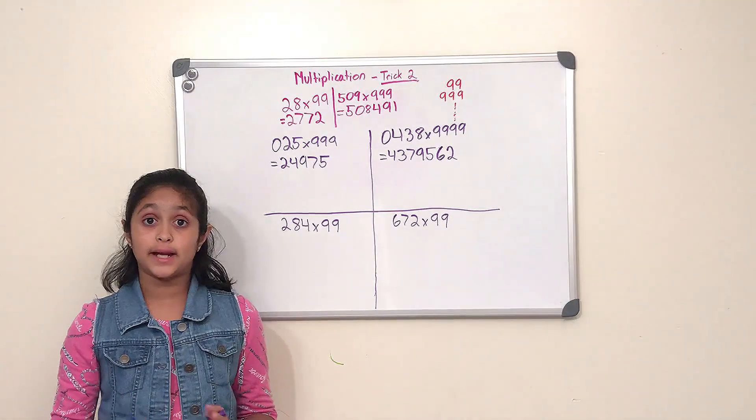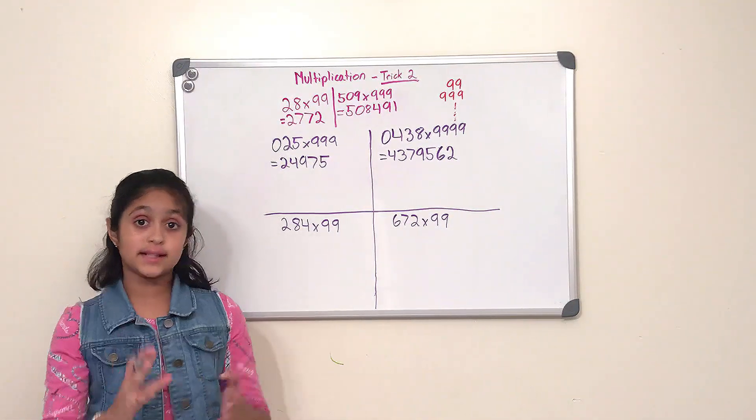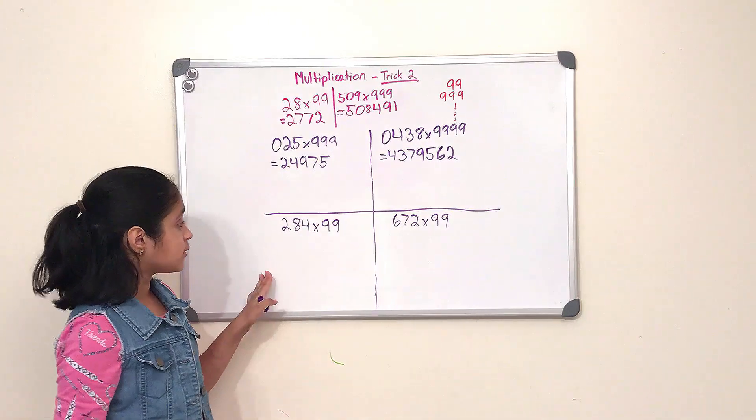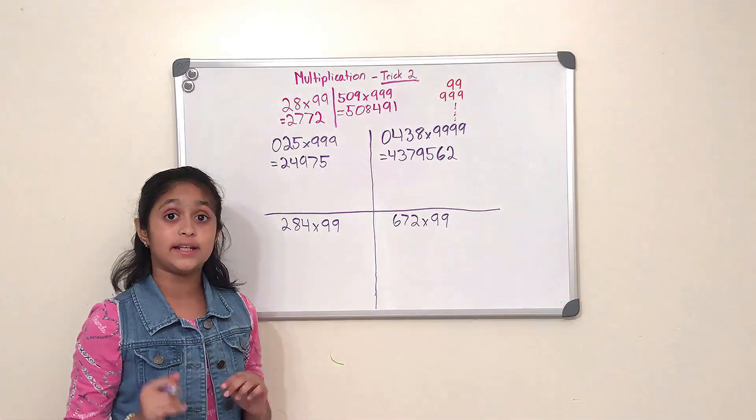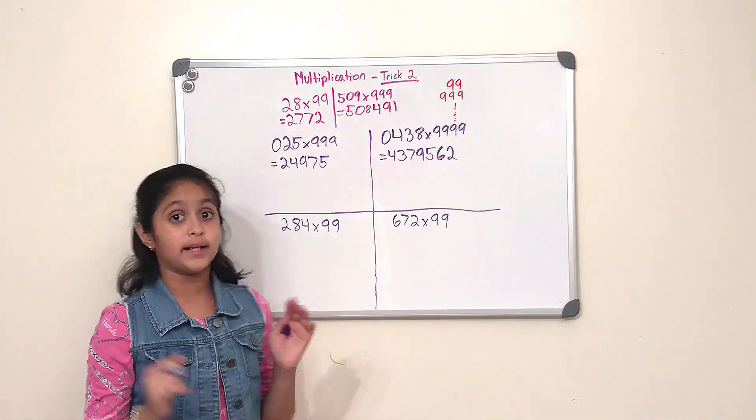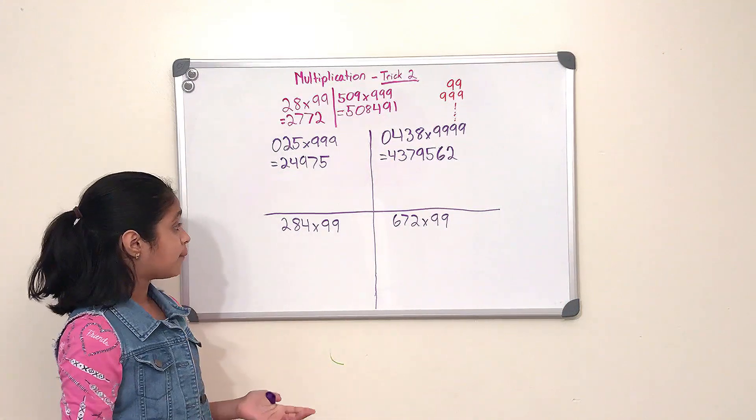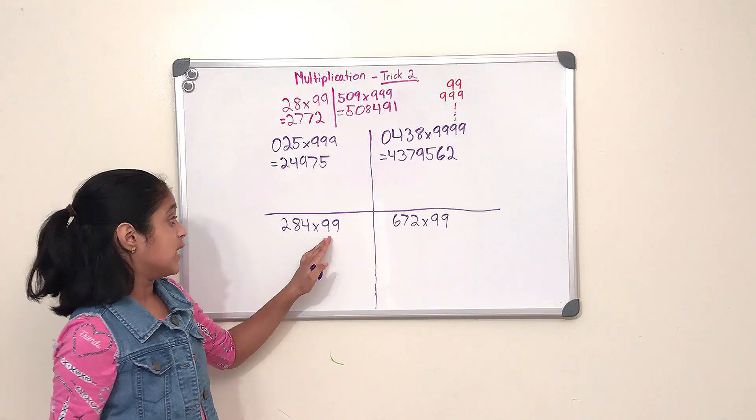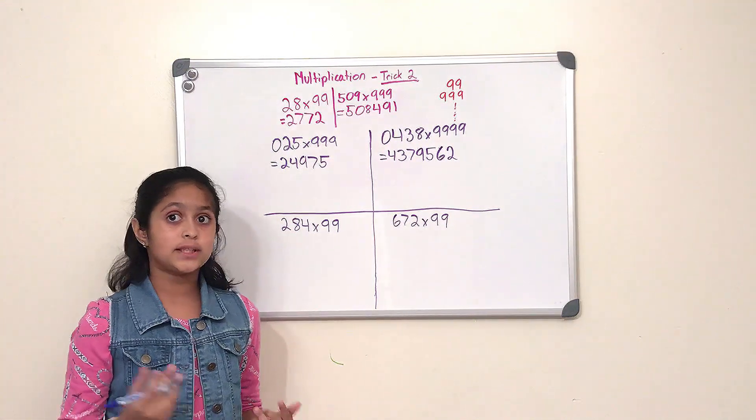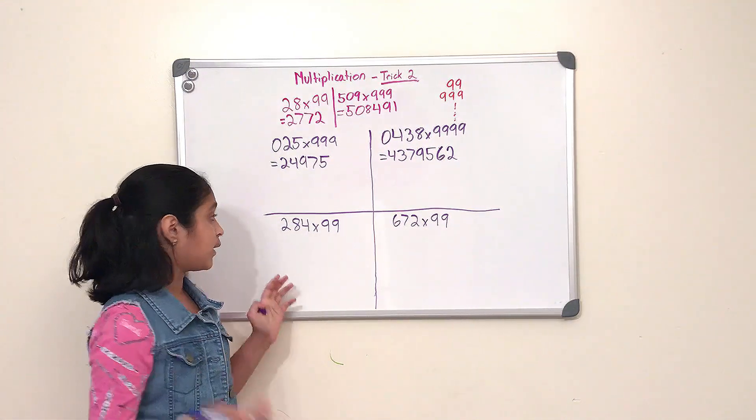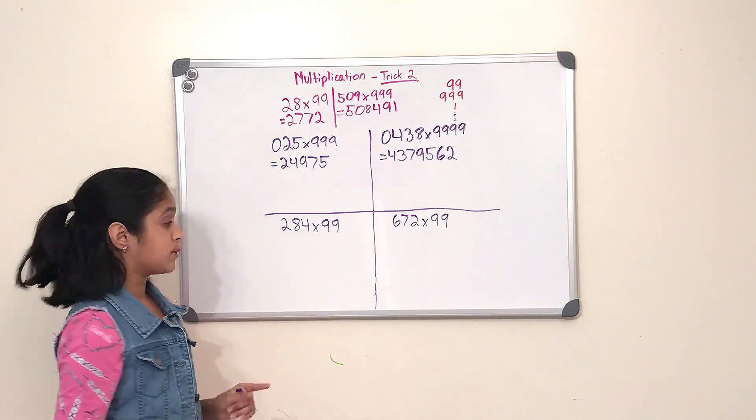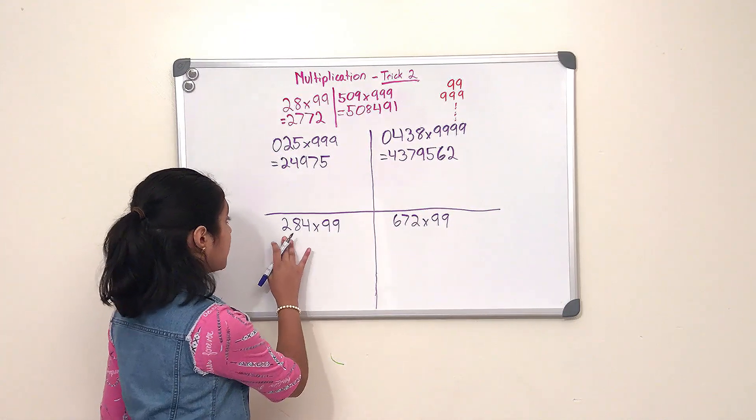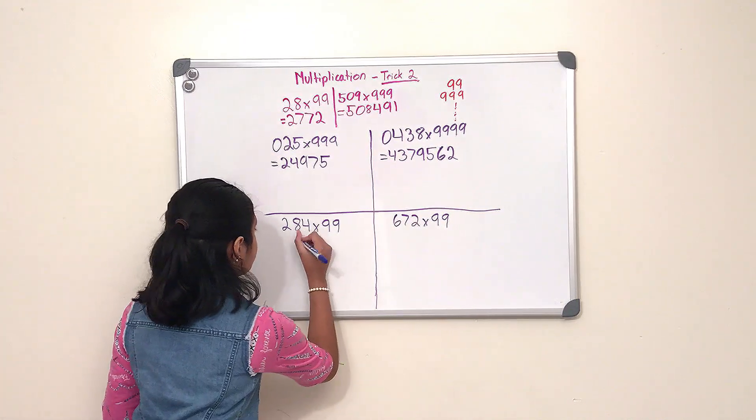So in these two problems, we have to multiply a bigger number of digits by a less amount of nine. The first one is to do 284 multiplied by 99. The first step is we have to identify which base is closest to the number of nines, which that would be 100. So in 100 there are two zeros, so what we have to do is add two zeros after 284 just like this.